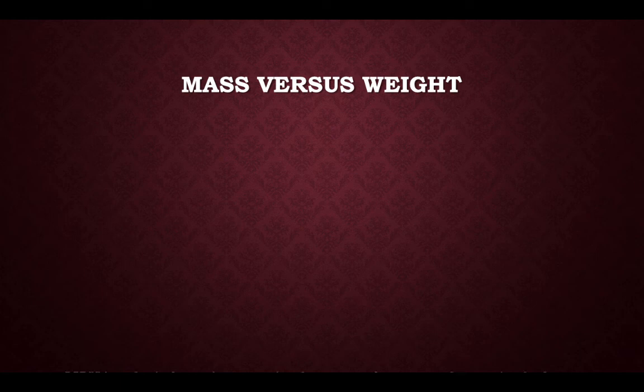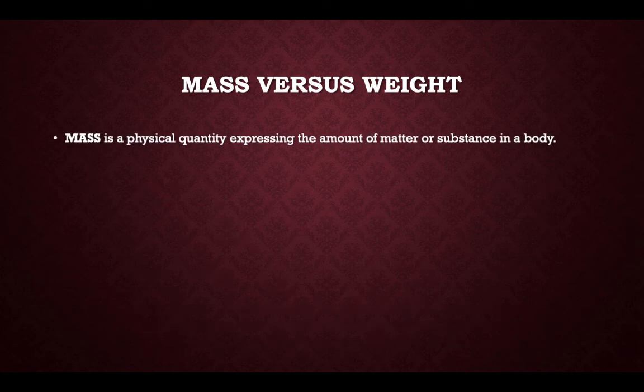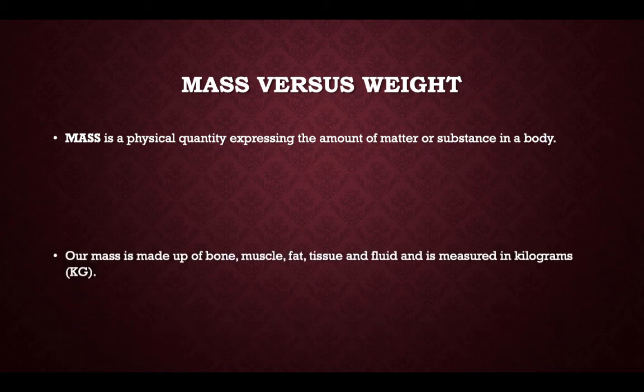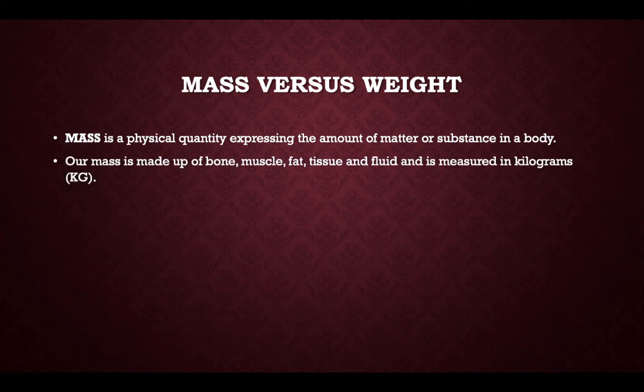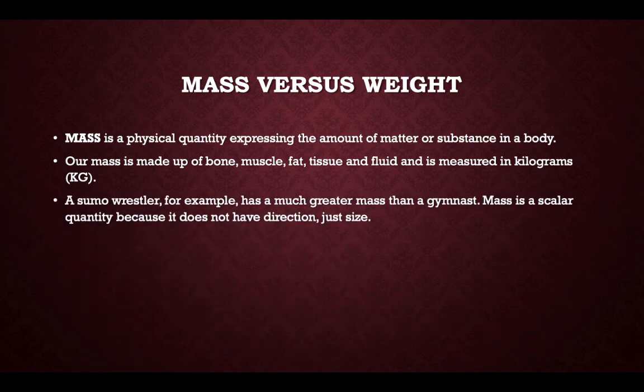Mass versus weight. Mass is a physical quantity expressing the amount of matter or substance in the body. Our mass is made up of bone, muscle, fat, tissue and fluid, and is measured in kilograms. A sumo wrestler, for example, has a much greater mass than a gymnast. Mass is a scalar quantity because it does not have direction, just size.